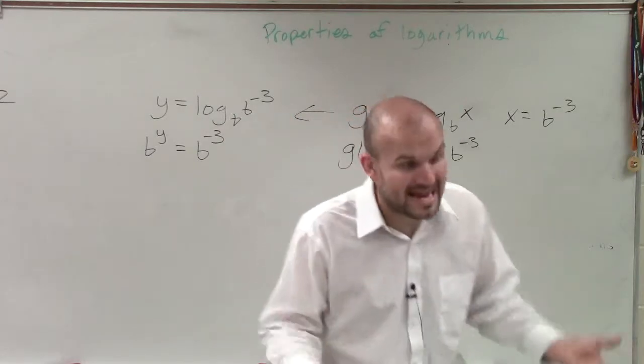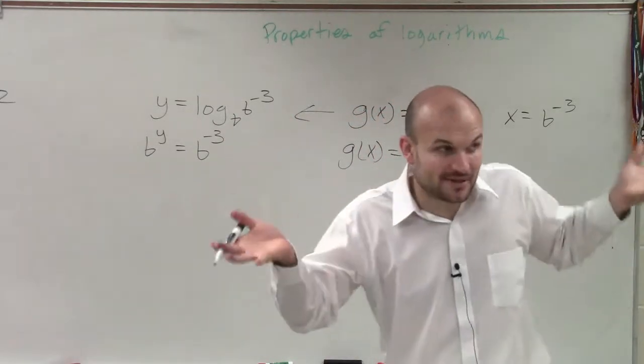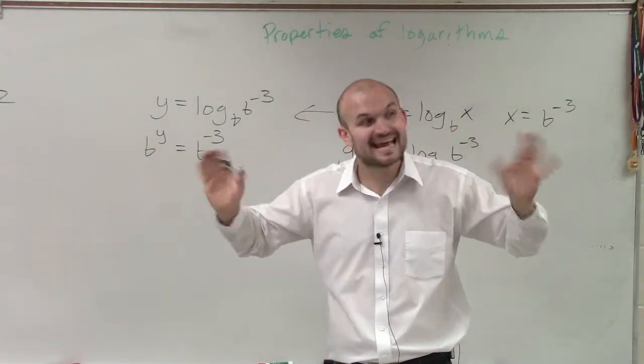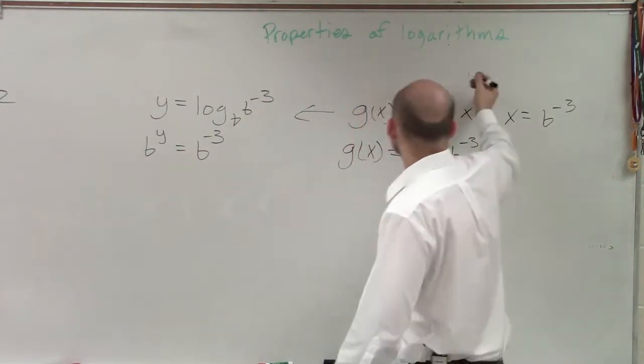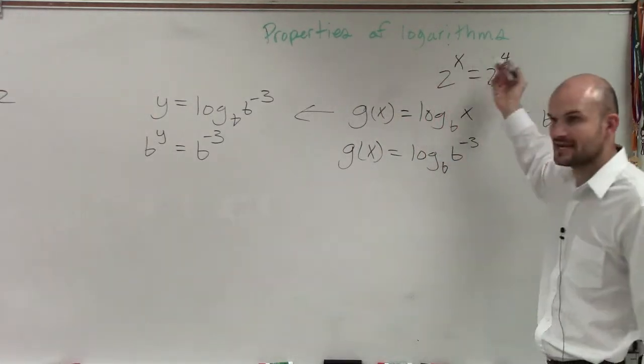If I have the same base with different exponents, what do those exponents have to be? The exact same, right? You can't say, if I say 2 to the x equals 2 to the 4th, what does x have to equal?